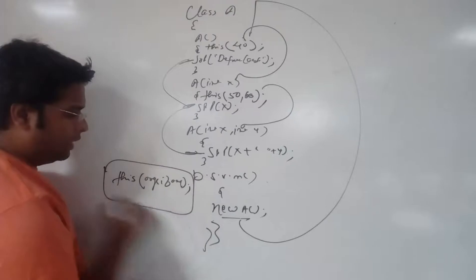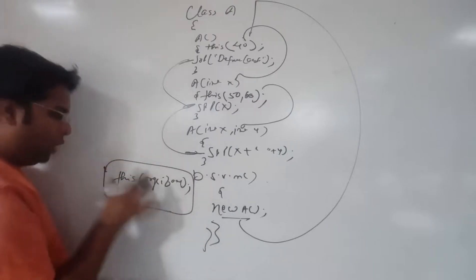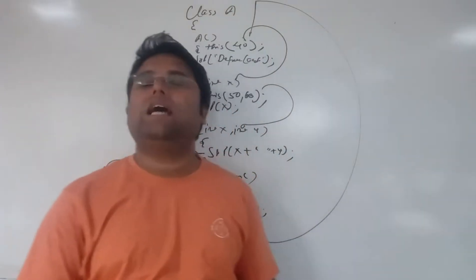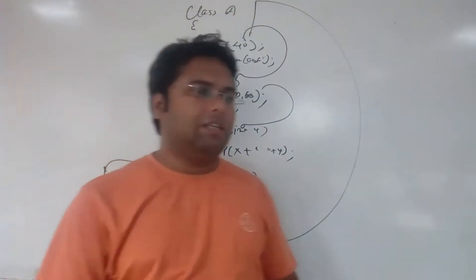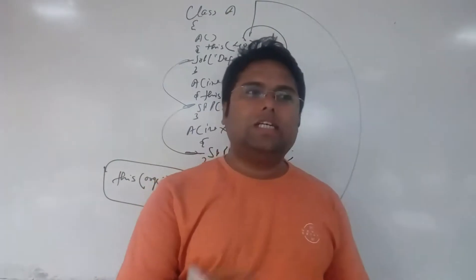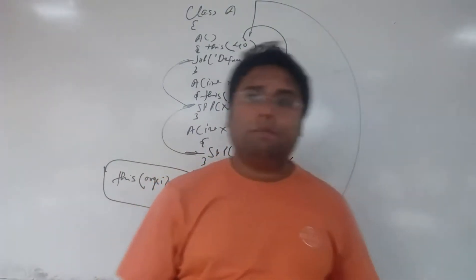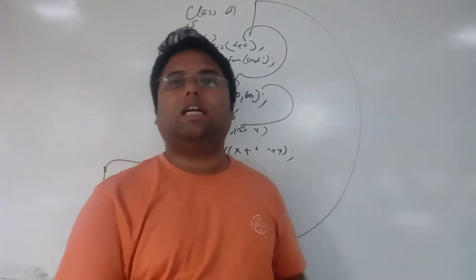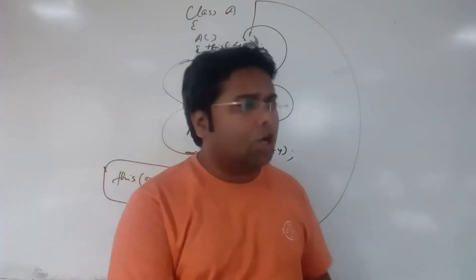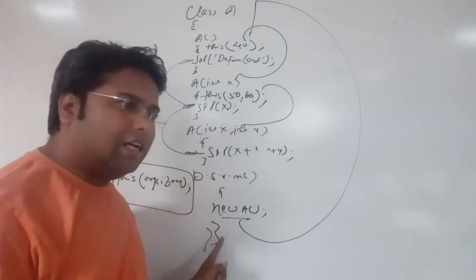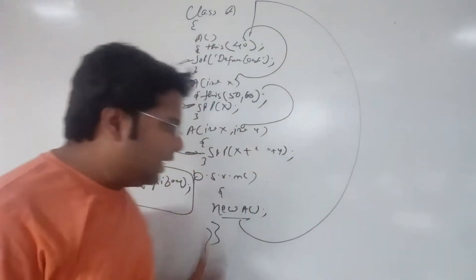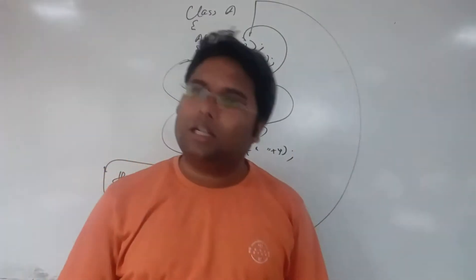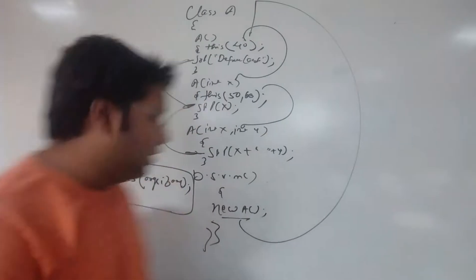Think of it like a person going for an interview — there is a single object (the candidate) and multiple rounds happen on that object: aptitude, GD, technical, and HR. So for one object with multiple tasks, there are multiple constructors — and to call those multiple constructors, we use `this`.